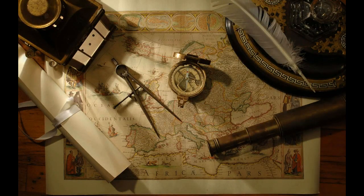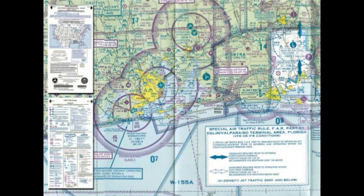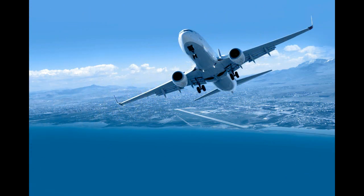The same principles can be used for air navigation. For instance, a plane can use its height above the ground and its distance from the destination airport to find the correct place to begin a descent to that airport.